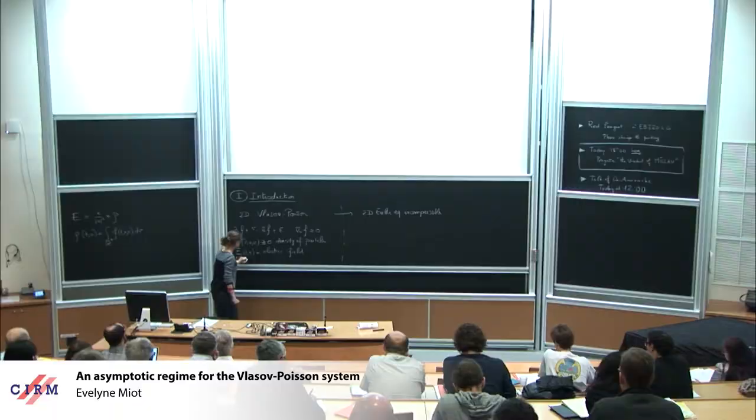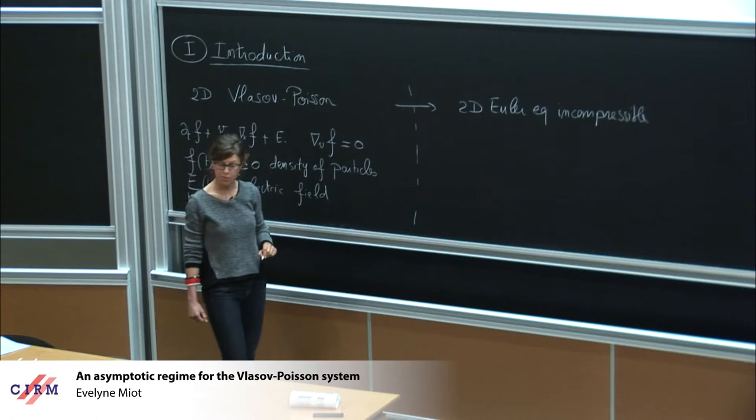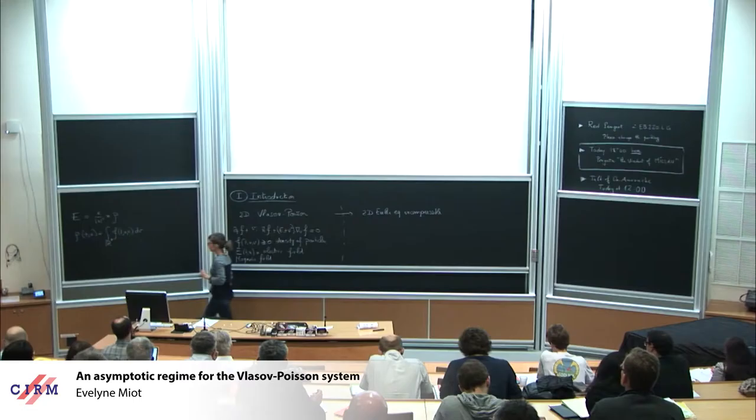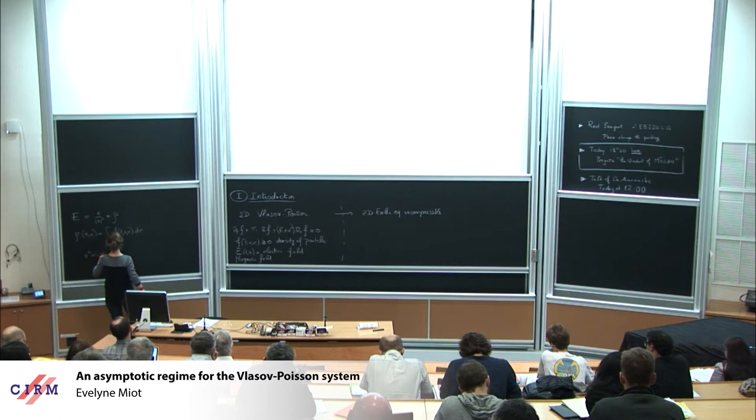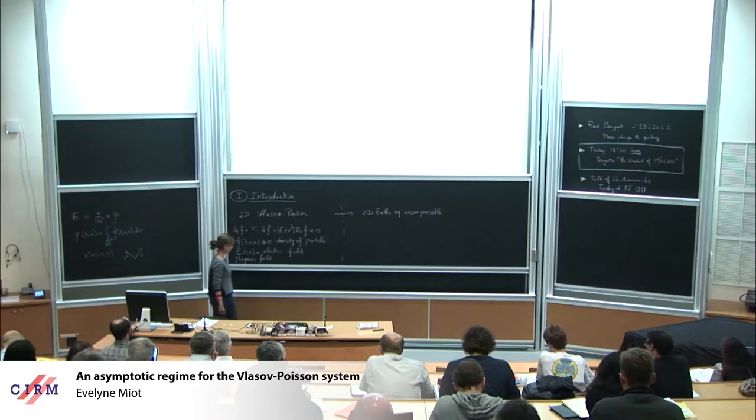I also add a magnetic field which is orthogonal to the plane, and which is represented by this vector field here, V perp gradient Vf, where V perp equals minus V2, V1. So you take a vector V and you take the pi over two rotation and you get this vector.